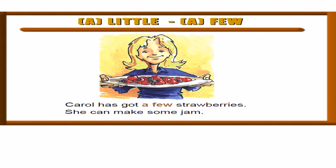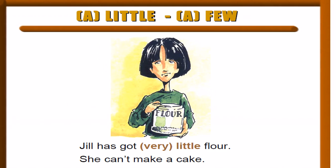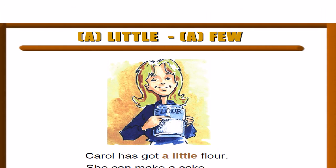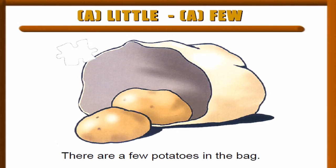Carol has got a few strawberries — she can make some jam. We use 'a few' because strawberry is a countable noun. Gel has got very little flour — she can't make a cake. We use 'little' because flour is uncountable. There are a few potatoes in the bag — we have some potatoes but they are not many, so we use 'a few.'